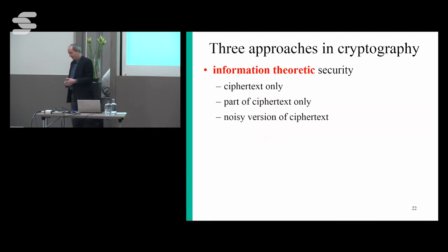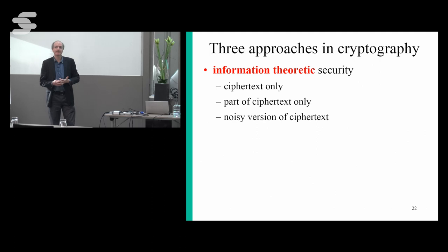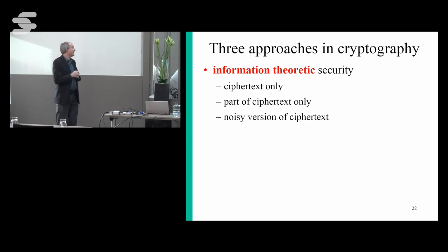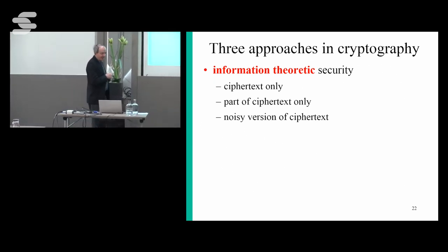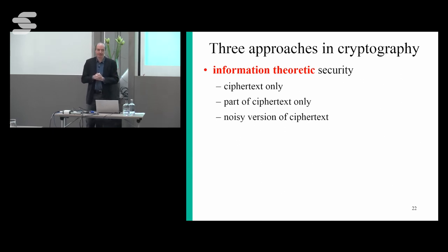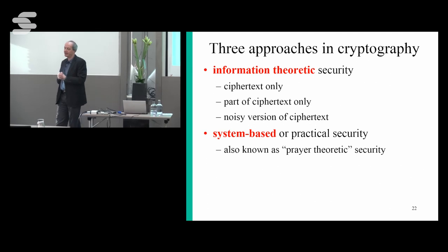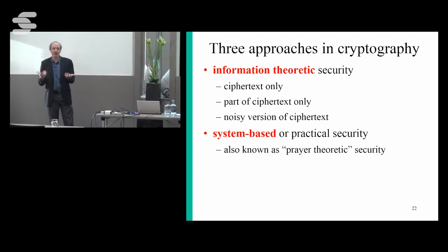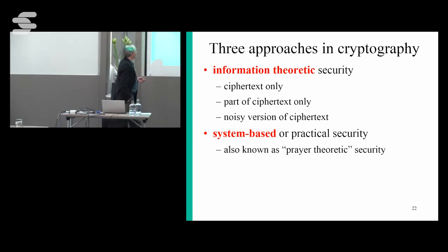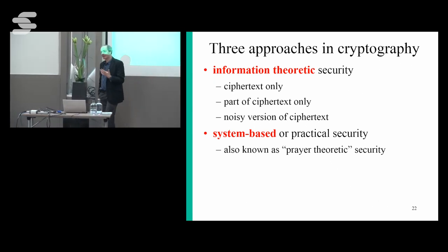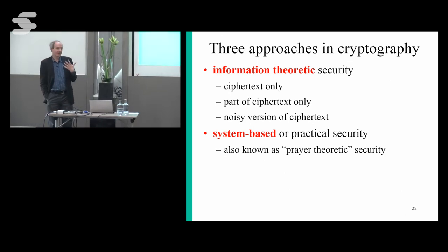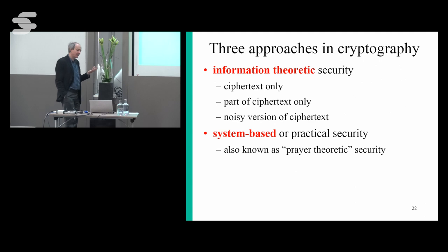In cryptography, information-theoretic security is very attractive because you don't need to take into account the computational power of your opponent, and you can make nice proofs. But in general, most of these schemes are not very practical. What you see today in most cryptography is system-based security — like modern rotor machines called LFSRs or block ciphers. Some friends call this 'prayer-theoretic security' because you design a crypto system and every night you pray that nobody will break it. We can't prove that it's hard to break something — you just make a system, hope nobody can break it, and put it out.